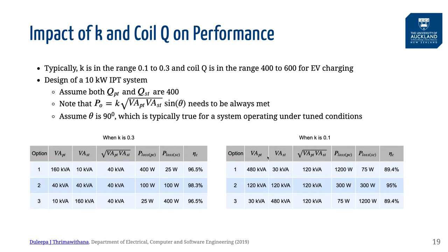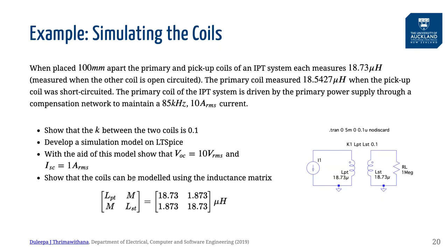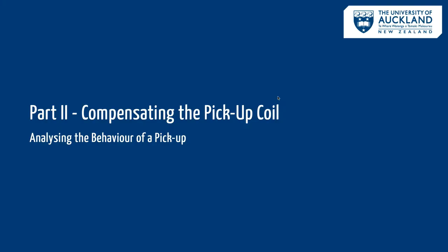To highlight the importance of distributing VAs according to the coil quality factors, let's look at an example. As evident from this table, regardless of the coupling factor, maximum efficiency occurs when the VAs are distributed equally since the coils have the same quality factors. So far, we learned that regardless of all the fancy converters and compensation networks used in an IPT system, the power transfer is simply the product of the coupling factor and the square root of the VAs in each coil.